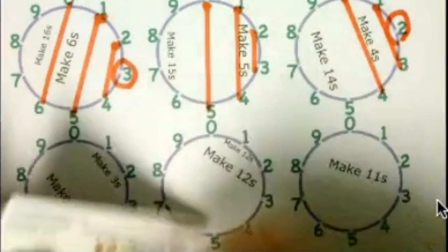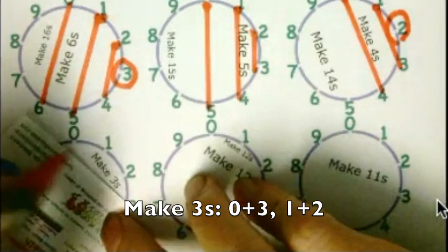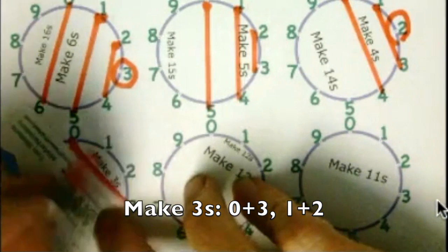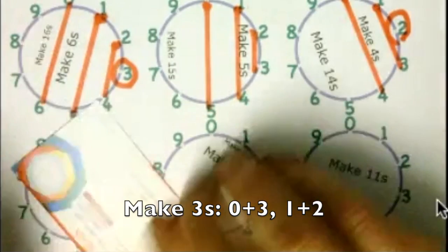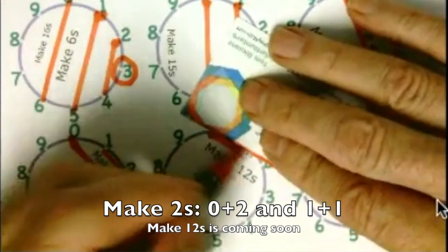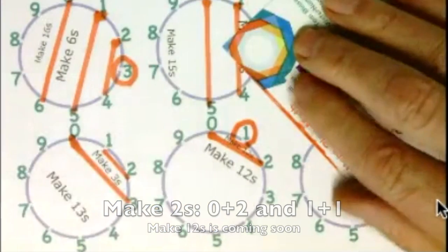And then we're going to do make 3s. So we'll do 0 and 3, and 1 and 2 make 3. And for 2s, make 2s, 0 and 2 make 2. And 1's all by itself, and we circle that.